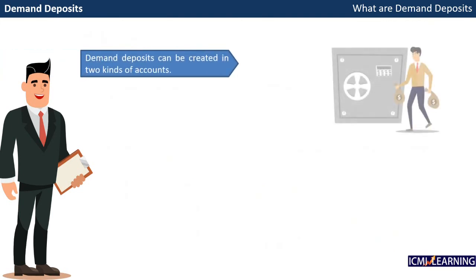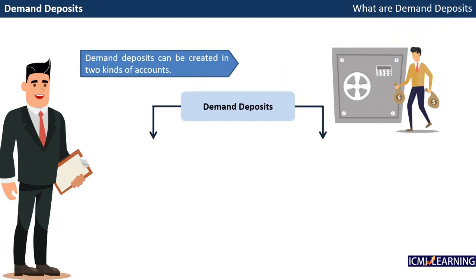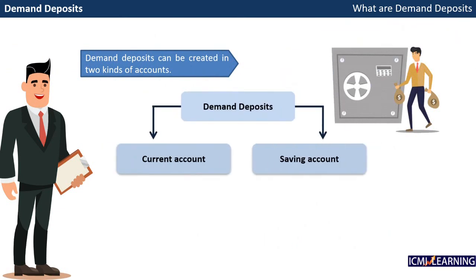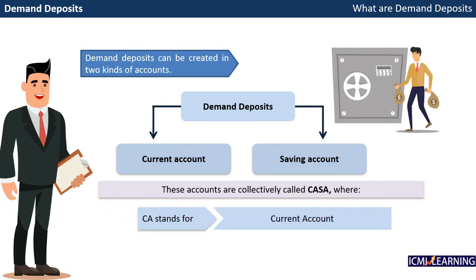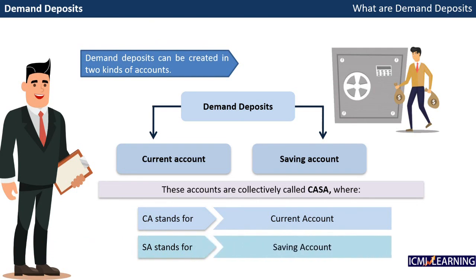Demand deposits can be created in two kinds of accounts: current account and savings account. These accounts are collectively called CASA, where CA stands for current account and SA stands for savings account.